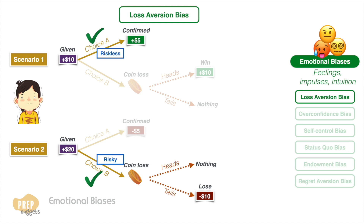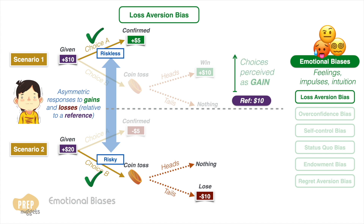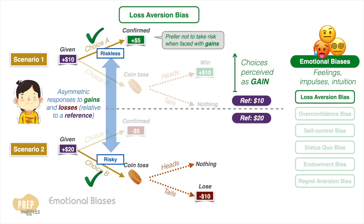This study concludes that individuals display asymmetric responses to gains and losses relative to a reference point. In scenario one, the reference is the ten dollars initially given to the individual. The individual perceives the choices as a gain relative to that reference, and an individual prefers not to take risk when faced with gains.